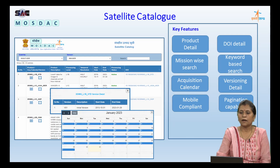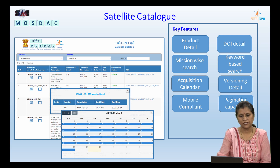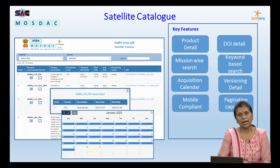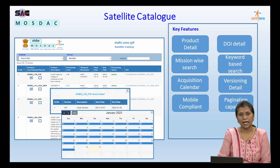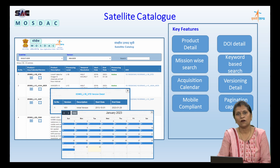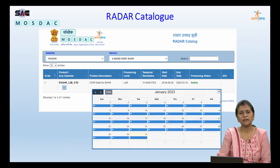Coming to the satellite catalog, we have satellite catalog from eight meteorological and oceanographic missions. Here is the catalog of INSAT-3DR and imager payload, showing the L1B data products. The catalog describes product descriptions and also has document object identifiers associated with it. It provides mission-wise search, keyword-based search, versioning details, and an acquisition calendar which describes the day-wise count of data products available on MOSDAC over a calendar view. This application is mobile compliant and can be accessed on any device, with pagination capabilities.